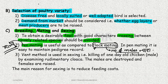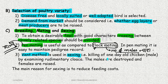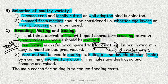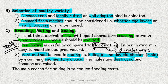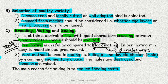To reduce feeding cost, the vent method or sexing is used. In this method, one-day-old chickens are examined - especially males. Their rudimentary cloaca is examined and they are destroyed, while females are raised. The main reason is to reduce feeding cost and unnecessary building space, nothing else.